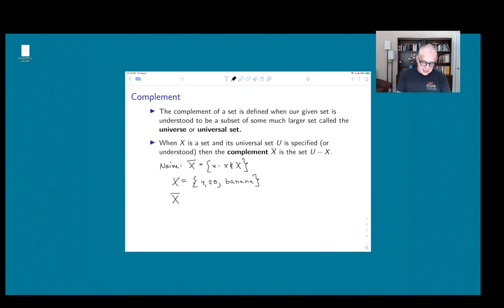And so the way we fix that is by thinking of X inside some bigger set U, which we might, in this particular case, be the collection of all x so that x is a fruit or x is an element of the natural numbers. And in that case, the complement of X, which is U minus X, would be the collection of everything which is a fruit but not a banana or a natural number but not 4 or 20.